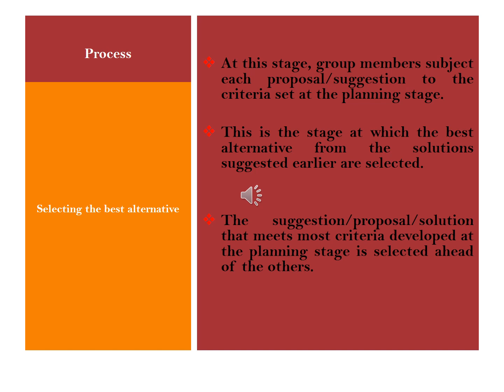It might also be important for groups to be convinced that the alternative they are picking can work, especially if it has worked elsewhere. If it has worked elsewhere in solving a problem similar to the one being addressed, it should be chosen on the basis of its strength. All these factors need to be considered when a given alternative is being chosen. The best alternative picked should be the one the group considers best — meaning it meets certain standards, certain criteria, and has been proven successful in resolving a similar problem.